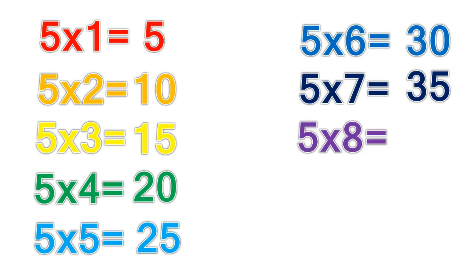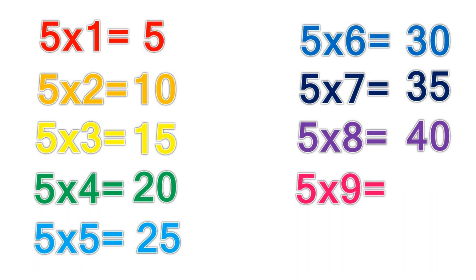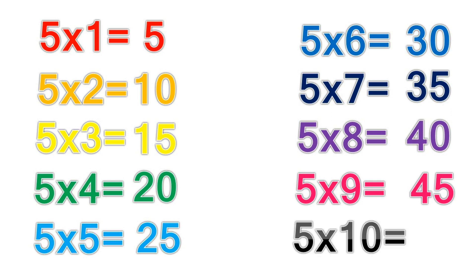5 times 8 equals 40. 5 times 9 equals 45. 5 times 10 equals 50.